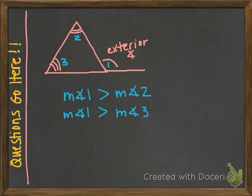If you see a problem like this, instead of 1, 2, and 3, you're going to have expressions that represent the measures of those angles. If it asks you to find the restrictions on x, you're going to set up an inequality — just replace the measure of angle one, two, or three with its expression. You might also want to add that these angles have to be greater than zero, then solve that inequality for the restrictions on x.